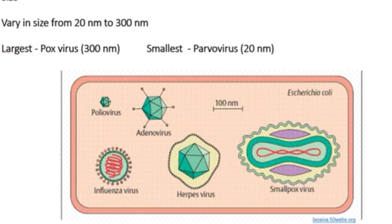Different types of viruses are present. Poliovirus, adenovirus, and Escherichia coli; smallpox viruses, herpes virus, and influenza viruses — these sizes range around 100 nanometres.